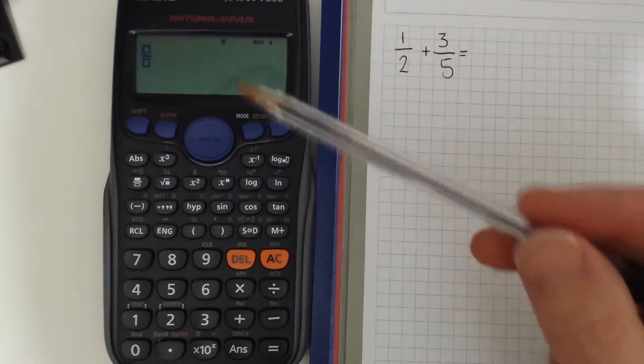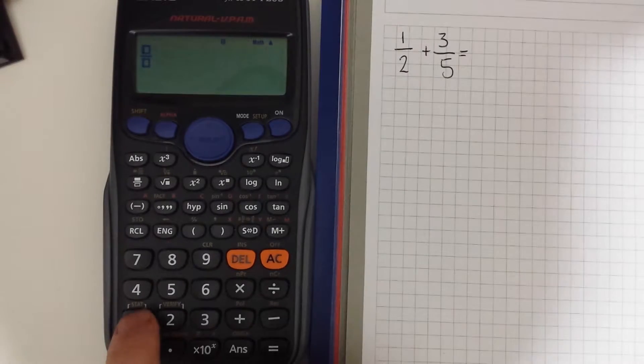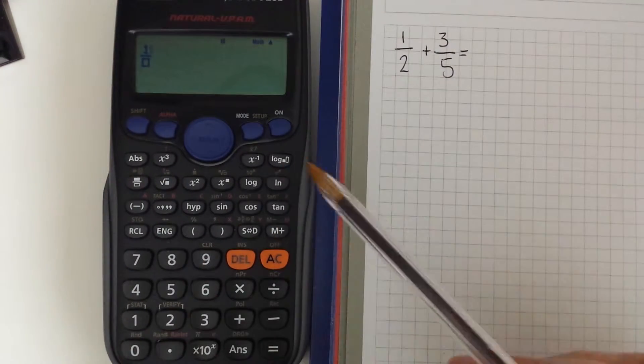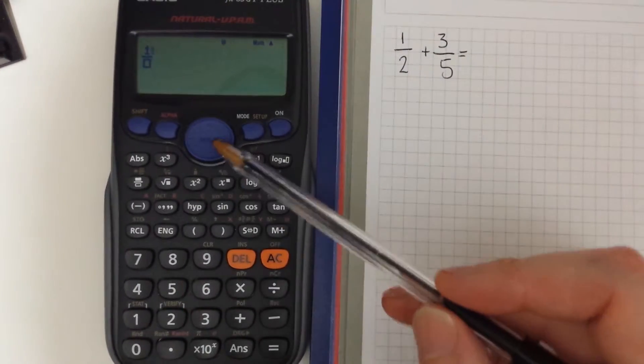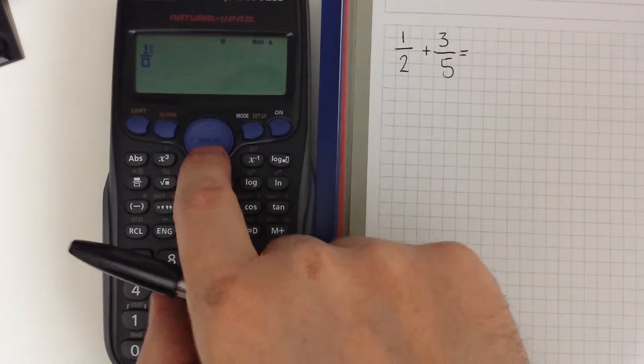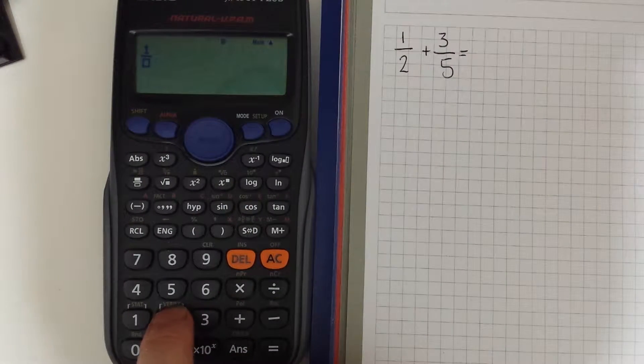So now we have a blank fraction we can enter one and then we can use this navigational pad to move down to the denominator and enter a half.